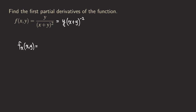We don't need to use the product rule here because y is treated as a constant multiple for this function, so we just copy it first. Then we differentiate (x+y)^(−2), which involves x. We bring down the negative two, giving us negative two in front, and then (x+y) — subtracting one from the exponent gives us negative two minus one.